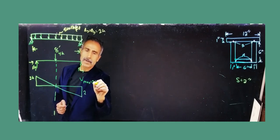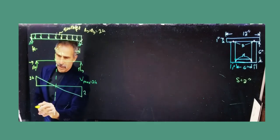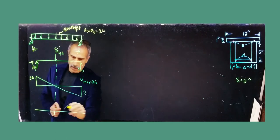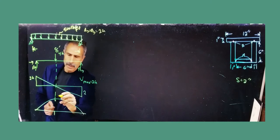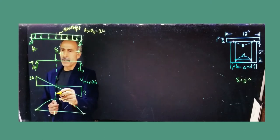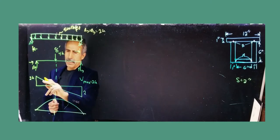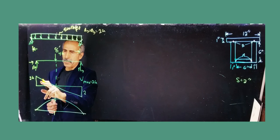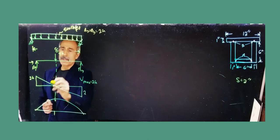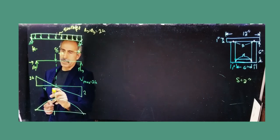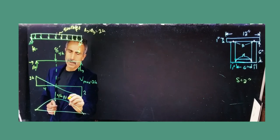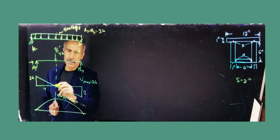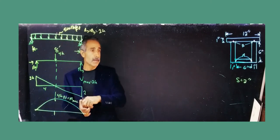We can also do the moment diagram — the maximum moment occurs where shear equals zero, at the center. That's the area of the triangle, which equals WL²/8. With a 4-kip load and 8-foot span, this becomes 4 kip-feet maximum moment. Now we have found the shear.